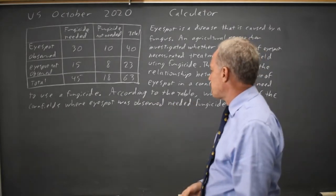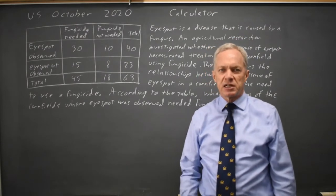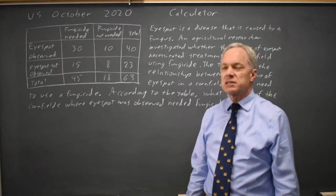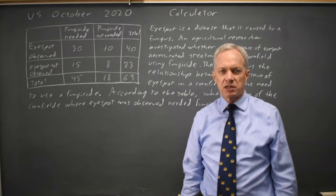what fraction of cornfields where I-spot was observed needed fungicide? These questions that ask for a probability or percent or a fraction from a table may ask about one or more rows, one or more columns, or the entire table.